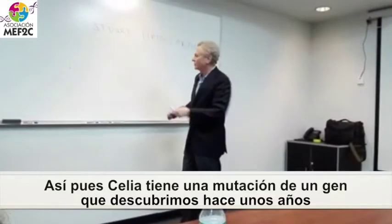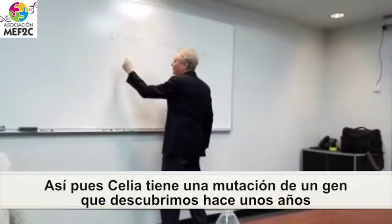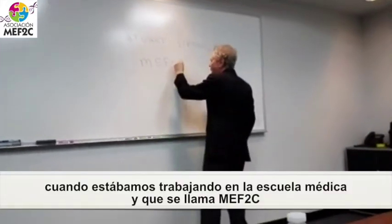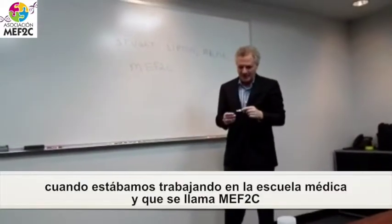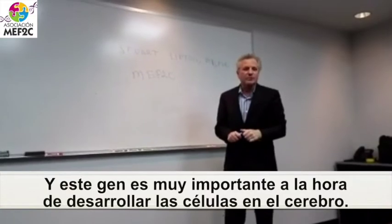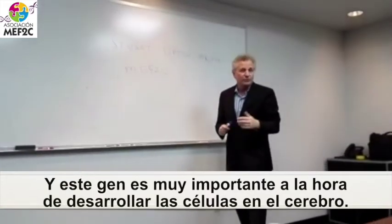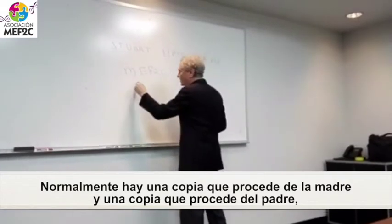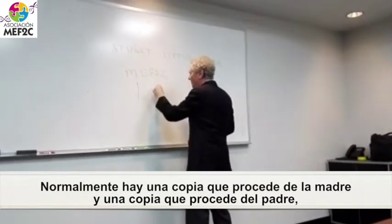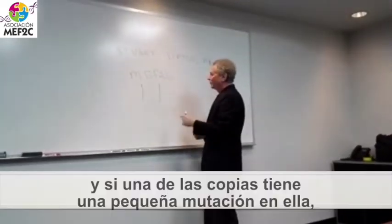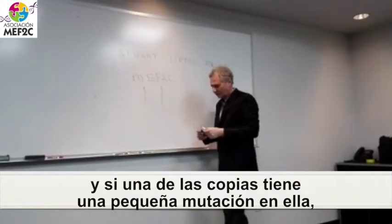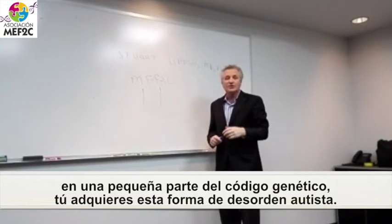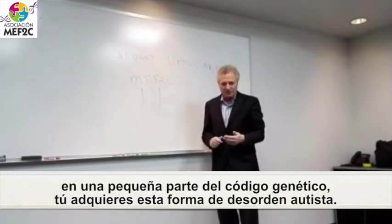Celia has a mutation in a gene that we discovered a number of years ago when I was at Harvard Medical School, called MEF2C. This gene is very important in making neurons — making nerve cells in the brain. Normally there's one copy that comes from your mother and one copy that comes from your father. And if one copy has a small mutation in it, a missing piece or the wrong genetic code, you get this form of Autism Spectrum Disorder.